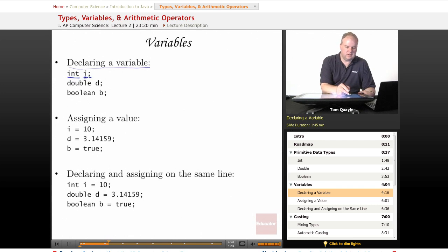So you declare a variable, type int, you call it i, semicolon. You declare a double in the same way, you call it D, and you declare a Boolean, and we call this one B.